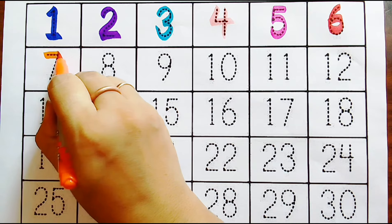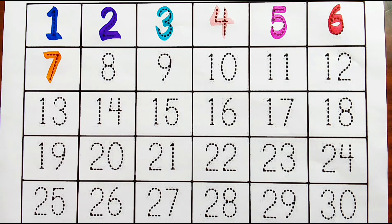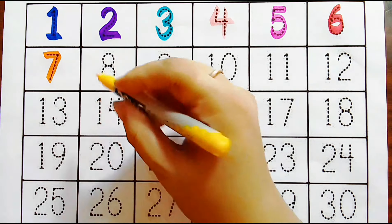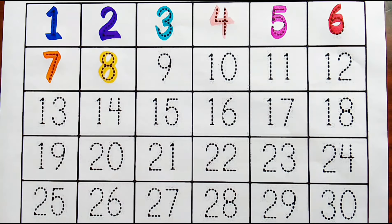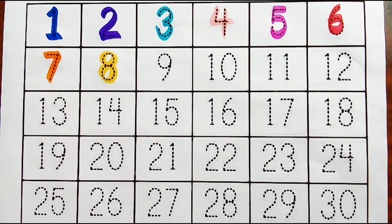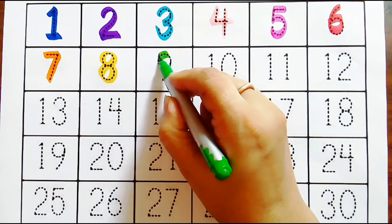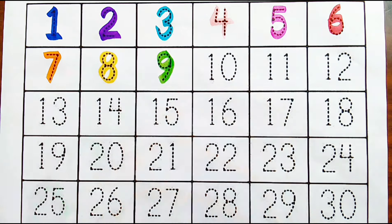Orange color, seven. Yellow color, eight. Green color, nine.